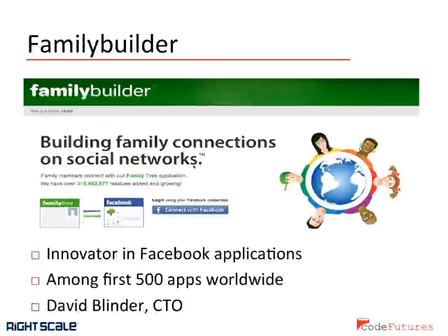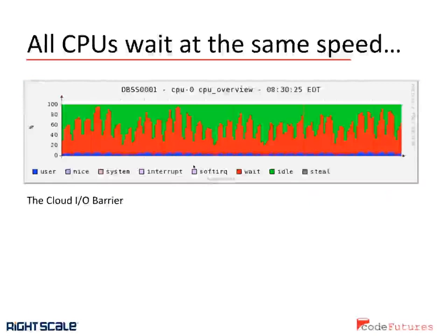I want to introduce David Blinder. He's the CTO of Family Builder, one of the very first Facebook applications. David was there from the very beginning and understands how this environment works incredibly well. They had some very interesting challenges. There's an old adage from the mainframe days: all CPUs wait at exactly the same speed. When databases get big, CPUs become very unproductive — they start waiting for I/O because the I/O can't keep up with the queries and writes for that particular database. This is an actual RightScale monitoring graph showing what Family Builder would look like before implementing database sharding — all the red is I/O wait, and the blue, which is very small, is the only productive CPU actually occurring.